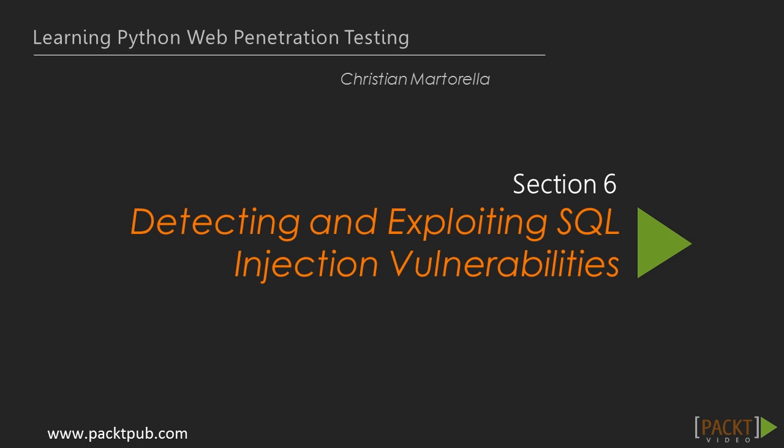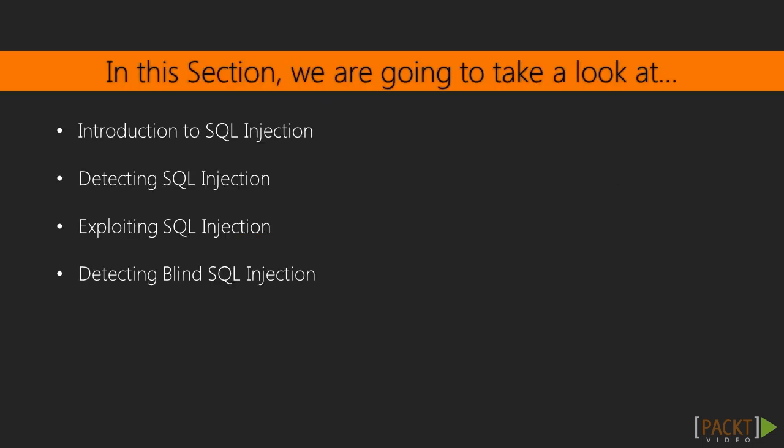In the previous section, we learnt about the different authentication methods and we created a password brute forcing tool. In this section, we're going to start by learning what is SQL Injection and how it works. Then, we're going to learn how to detect a SQL Injection and automate it with Python. Then, we're going to see how we can exploit the detected vulnerability and automate the actions we want to perform. Finally, we're going to learn how to detect blind SQL Injection.